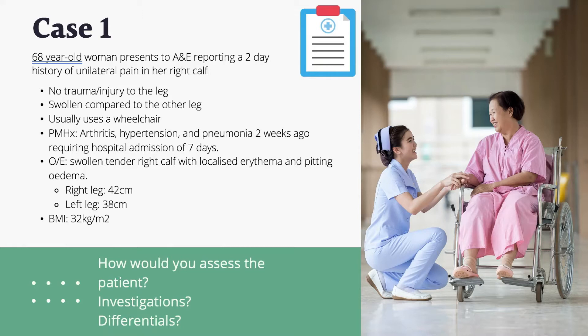For the first case we have a 68-year-old woman presenting to A&E with a two-day history of unilateral pain in her right calf. There was no preceding trauma or injury to the leg. It does seem to be quite swollen compared to the other leg, and she uses a wheelchair normally to mobilize due to her arthritis. She also reports having hypertension and was recently treated for pneumonia two weeks ago, requiring hospital admission of seven days. On examination she has a swollen tender right calf with localized erythema and pitting edema.